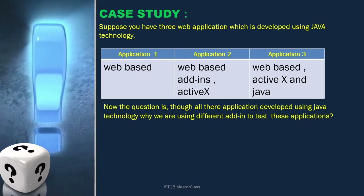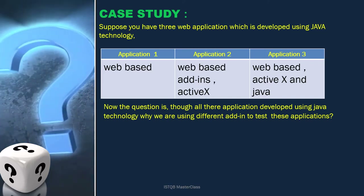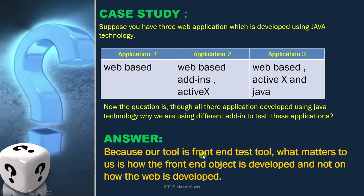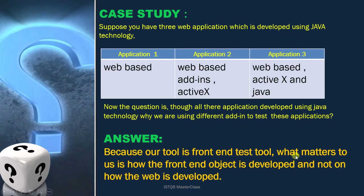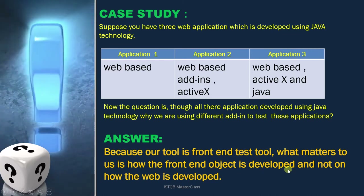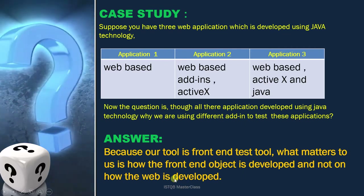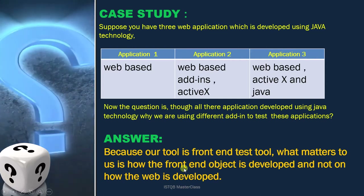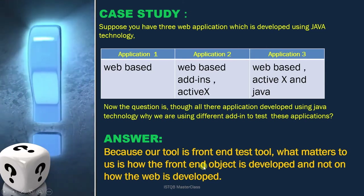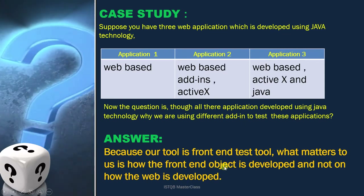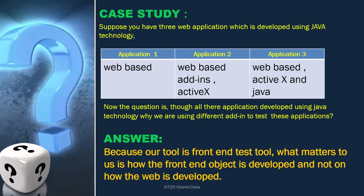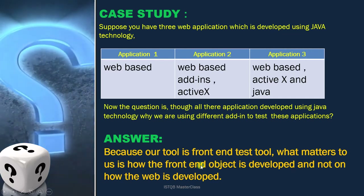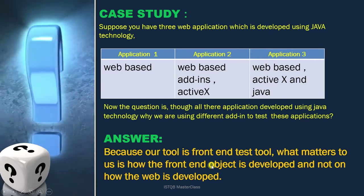To answer this, you can pause this video and think for a while. Since our tool is a front-end tool, what matters to us is how the front-end objects are developed, not how the back-end or web logic is developed. Front-end objects can be developed using HTML while internal functionality can be developed using Java, PHP, .NET, or any other technology. So you have to differentiate: the UI objects can be developed using HTML, but their logic can be developed using Java.